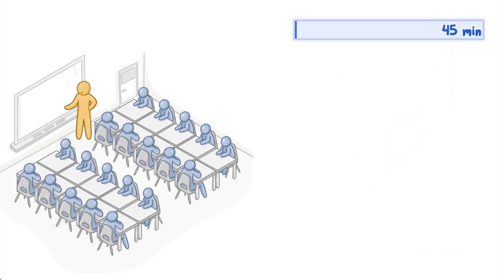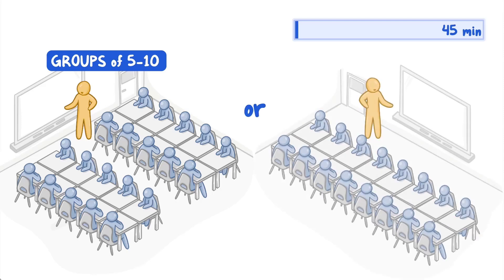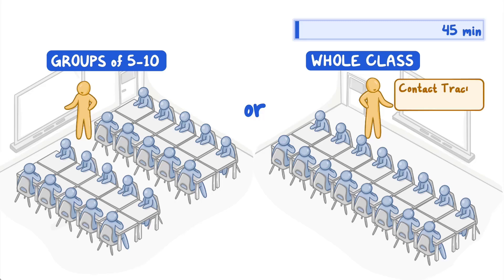Start this activity by dividing students into groups of 5 to 10 students. For class sizes of fewer than 20 students, this activity could be done as a whole class instead of in student groups. In this case, the teacher will take on the role as the contact tracing supervisor and multiple students will take turns acting as contact tracers.